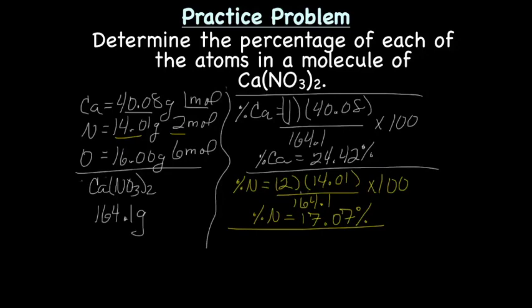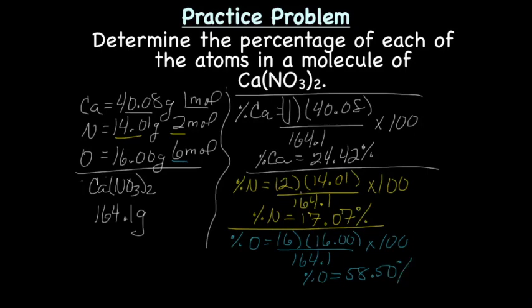And the last is percent oxygen. So, we have six moles times the molar mass of oxygen, divided by the molar mass of calcium nitrate, times 100, and that gives us percent oxygen with four sig figs is 58.50 percent. Now, again, I would double check to make sure these add up to just about 100, and that should be it.